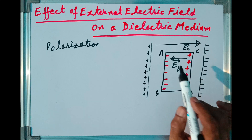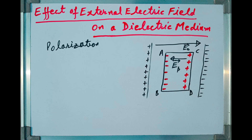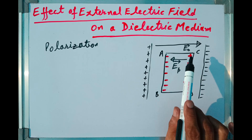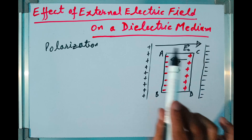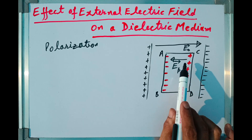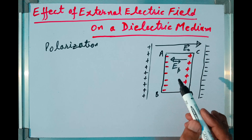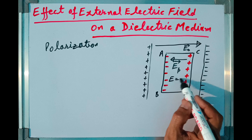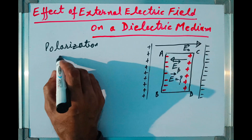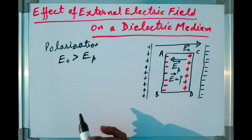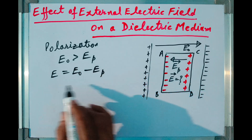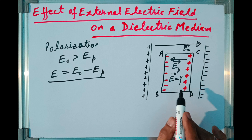So this is the effect of a strong external electric field on a dielectric slab. The dielectric slab is under the influence of two electric fields: one is the external strong electric field E₀ vector, directed from left side to right, and the second is Ep vector due to polarization of the slab, directed opposite to the external electric field. The net electric field inside the slab, denoted by E vector, is equal to E₀ minus Ep, since E₀ is greater than Ep.